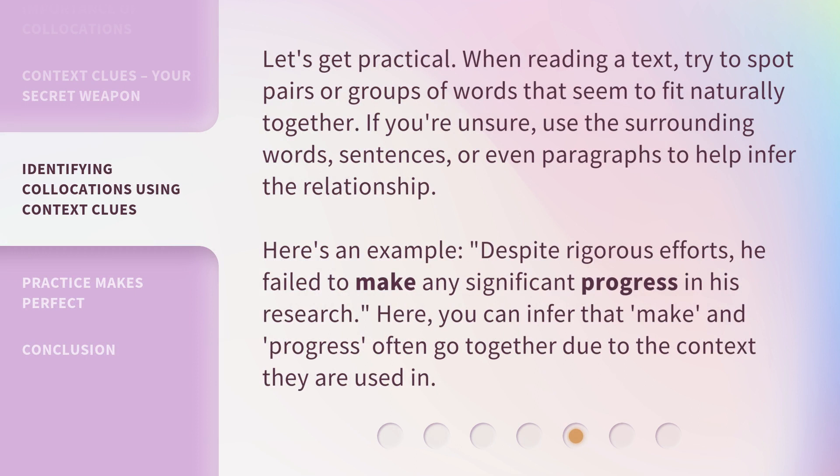Let's get practical. When reading a text, try to spot pairs or groups of words that seem to fit naturally together. If you're unsure, use the surrounding words, sentences, or even paragraphs to help infer the relationship. Here's an example: 'Despite rigorous efforts, he failed to make any significant progress in his research.' Here, you can infer that 'make' and 'progress' often go together due to the context they are used in.